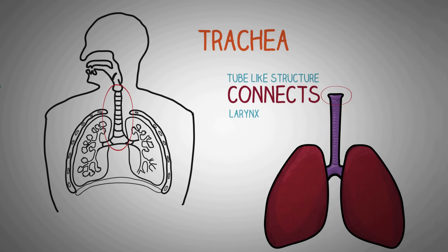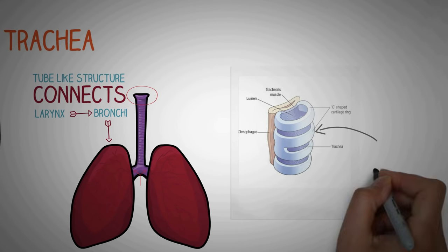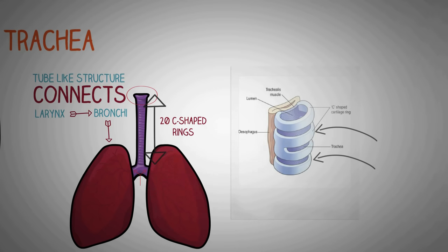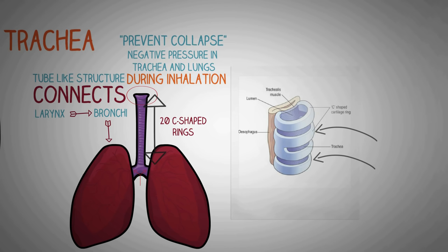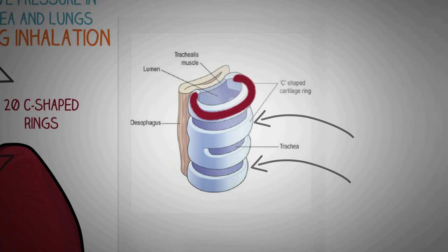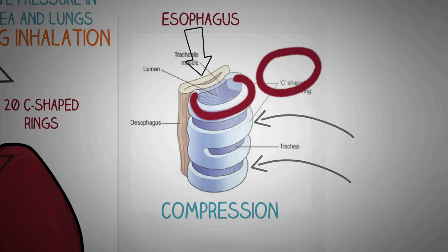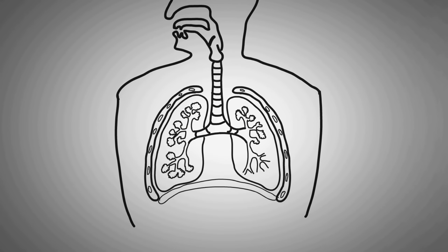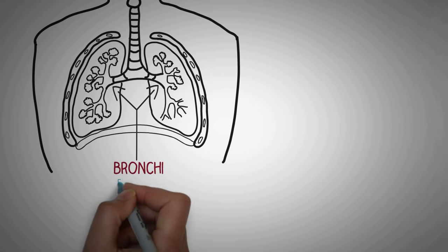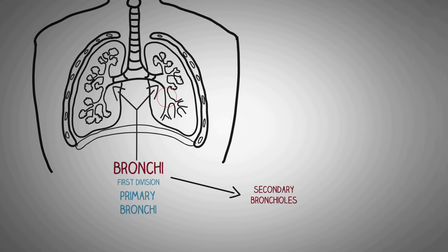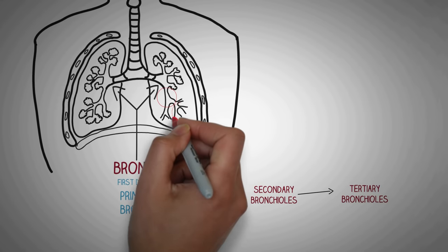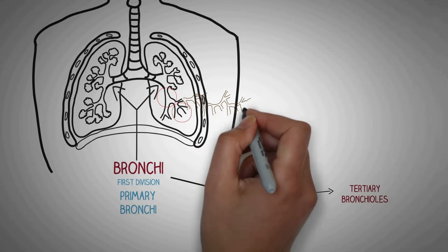The trachea is basically a tube-like structure which connects the larynx to the bronchi, and the bronchi in turn connect to the lungs. Looking at a cross-section of the trachea, we can see it is made up of 20 C-shaped cartilages from above to below. These cartilages prevent the collapse of the trachea because there is negative pressure in the trachea and lungs during inhalation. These tracheal rings are C-shaped rather than completely circular because the esophagus lies behind the trachea — circular rings would compress the esophagus during swallowing, which could lead to choking. The trachea then divides into the primary bronchi, which divide into secondary bronchioles, then tertiary bronchioles, which further divide about 20 times to form the conducting bronchioles.